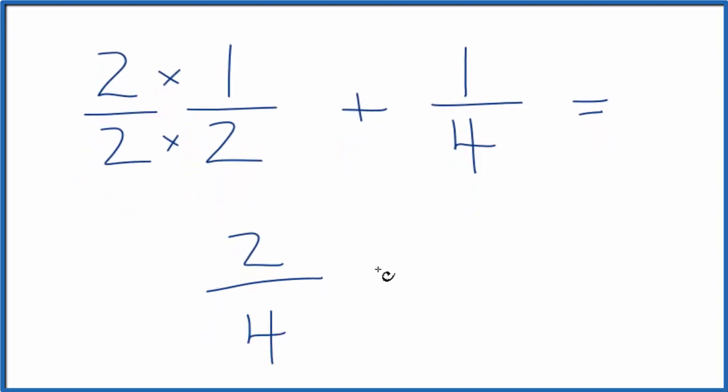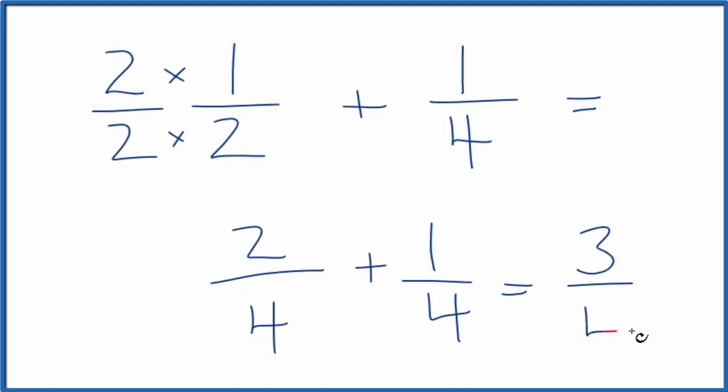Now we have four for our denominator here, so we can add one-fourth. We add the top. Two plus one is three. Bring the four across. So one-half plus one-fourth, that gives us three-fourths.